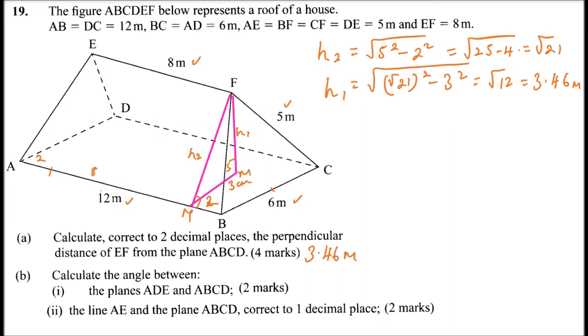The second part is (b). Part (b)(i): calculate the angle between the planes ADE and ABCD, worth two marks. Plane ADE is this plane here. To find the angle between two planes, we find the line of projection — we drop a perpendicular from E to join AD, and then find the angle between that line and the line dividing ABCD.